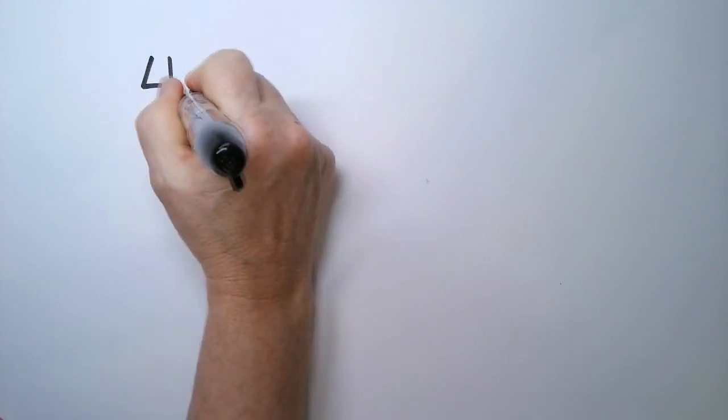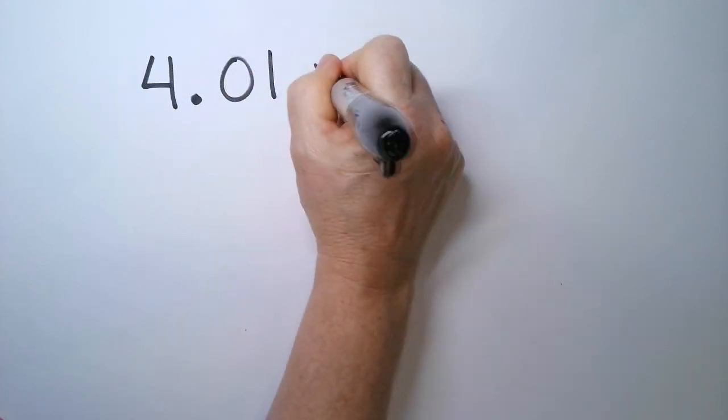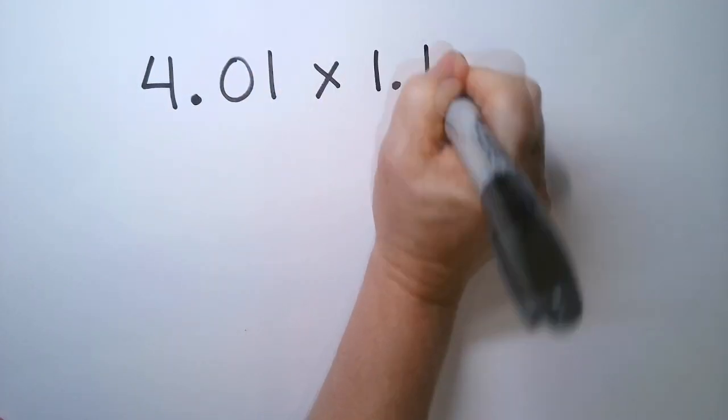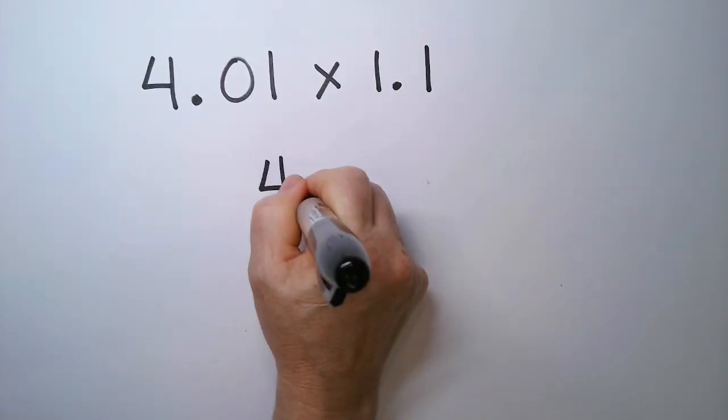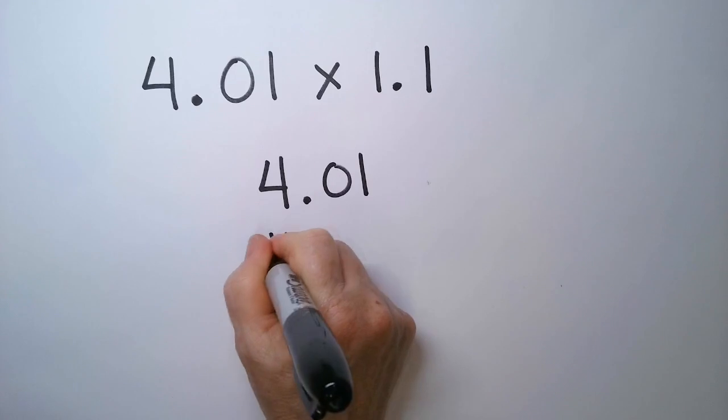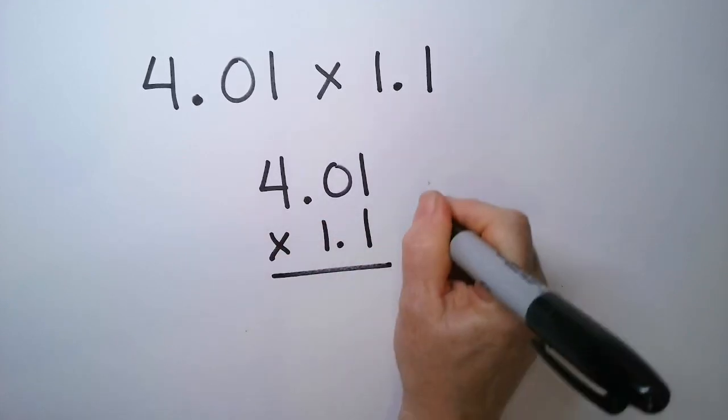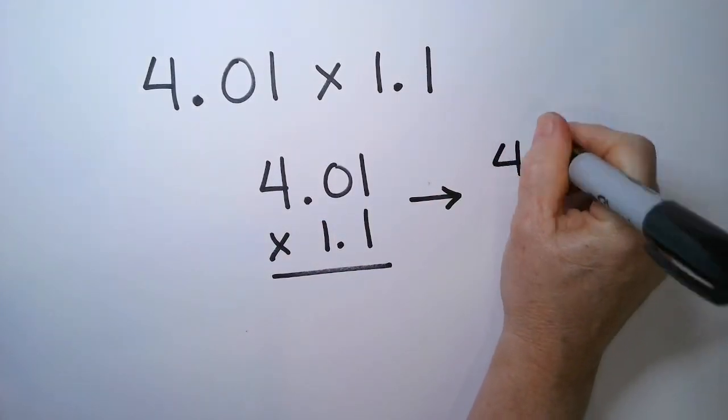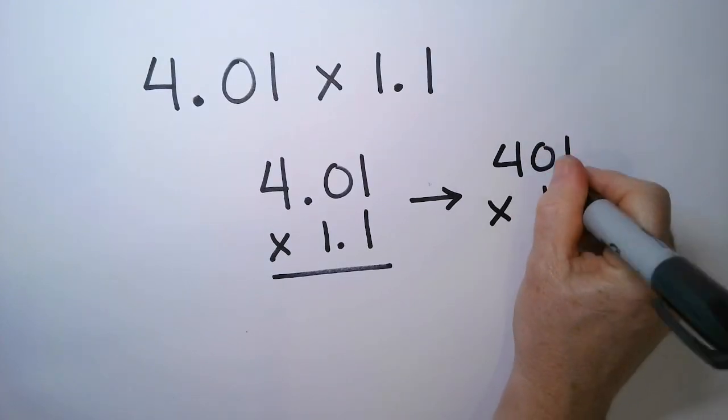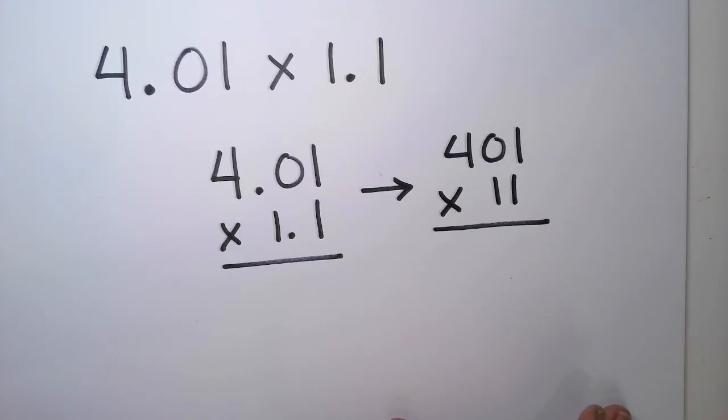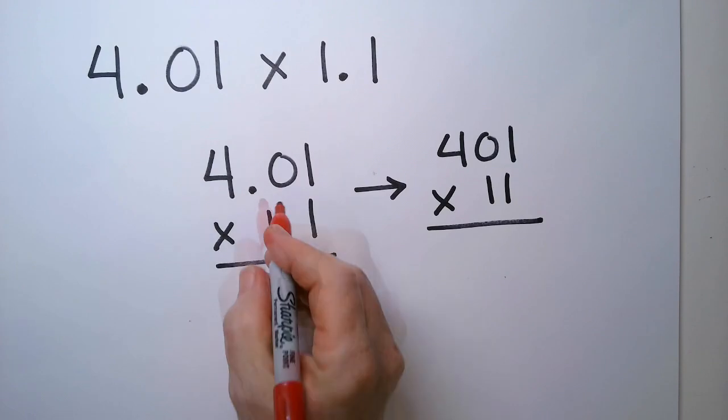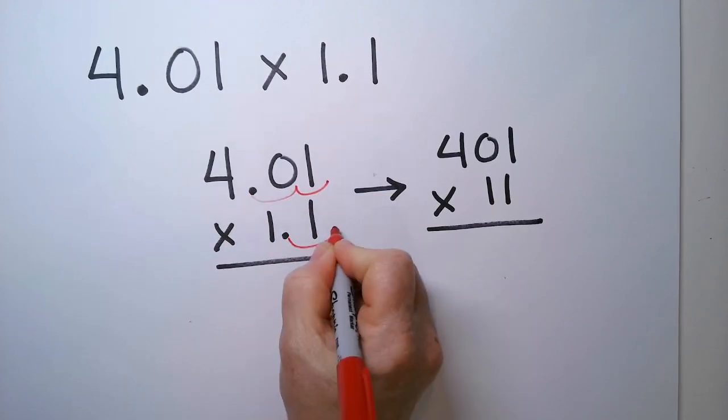I have 4.01 times 1.1. So I have 4.01 times 1.1, which is really going to look like 401 times 11. How did I get there? I went 1, 2, 3 hops.